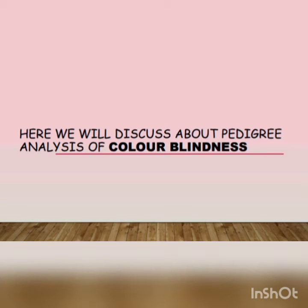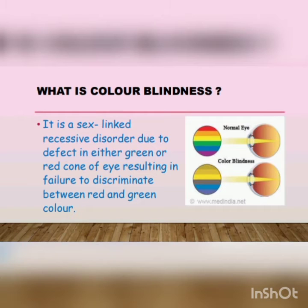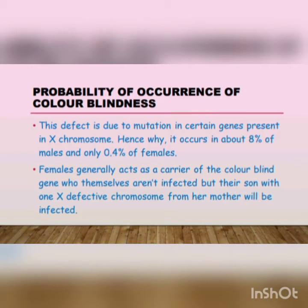Here, we will discuss about pedigree analysis of colorblindness. What is colorblindness? It is a sex-linked recessive disorder due to a defect in either the green or red cone of the eye, resulting in failure to discriminate between these colors.